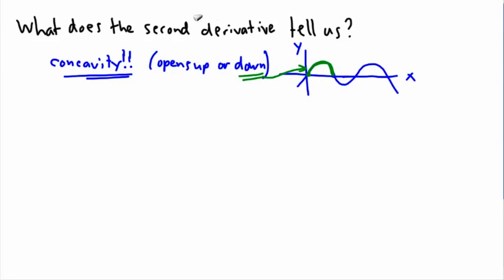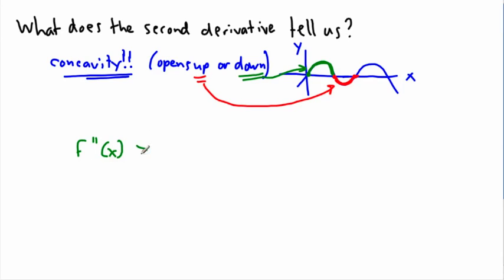Some people like to say it's a smiley face or a sad face. In any case, this graph has a section that's concave down and another section that's concave up — where it opens upwards, like a cup that can hold something. Now we can formalize it: if f double-prime of x is positive, then the function is concave up. If your second derivative is positive in some region, the graph curves upward in that region.